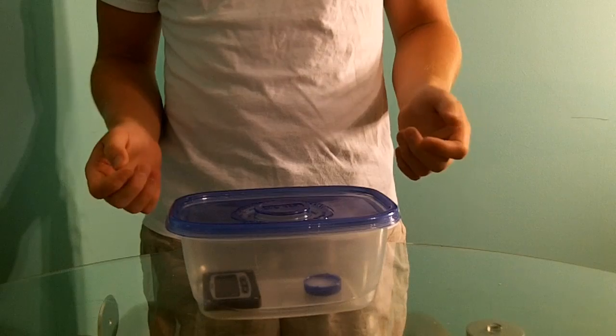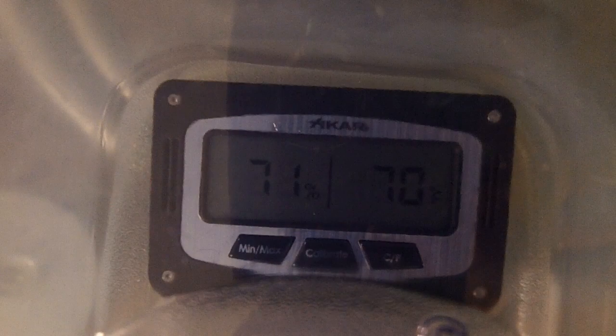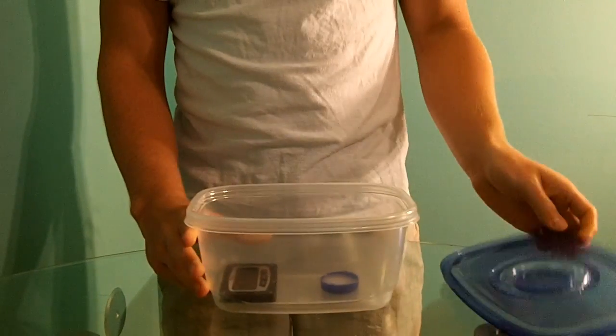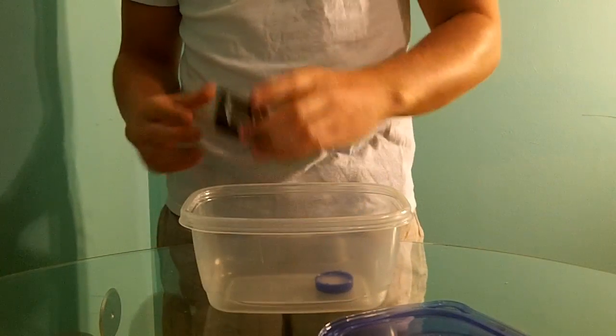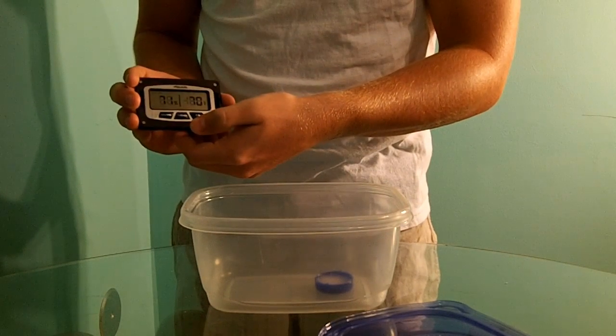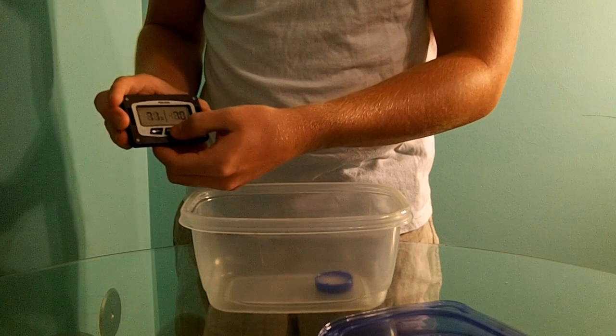Now we're going to have to take our hygrometer out of the Tupperware. And the nice thing about these iCars is there's an easy, simple calibrate button right in the center, which all we're going to have to do is press and hold it. And now we've successfully calibrated our hygrometer.